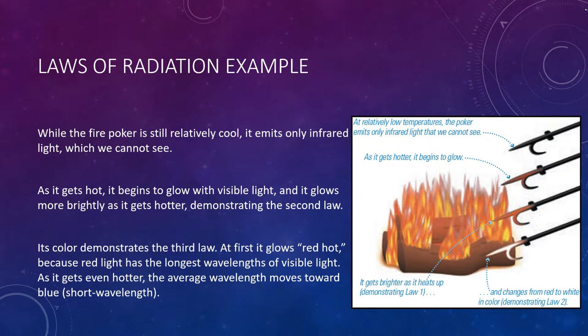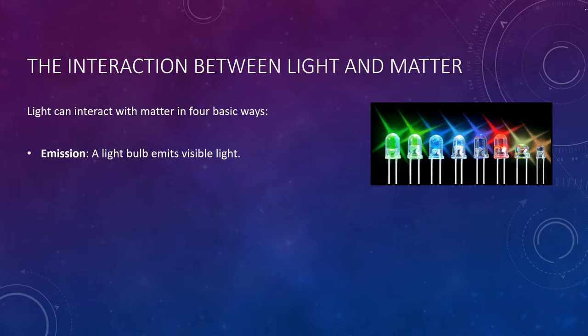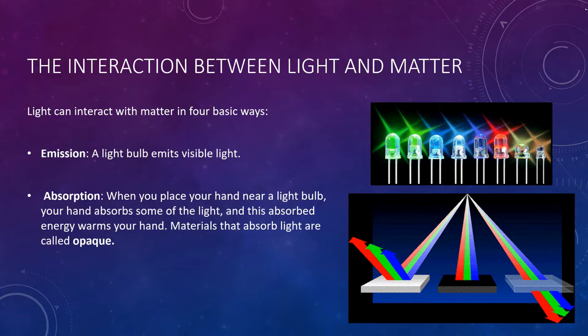Light can interact with matter in four basic ways. Emission — for example, a light bulb emits visible light, the energy coming from an electric potential energy supplied by the bulb. There's also absorption — when you place your hand near an incandescent light bulb, your hand absorbs some of the light, and this absorbed energy warms your hand. Materials that absorb light are called opaque.